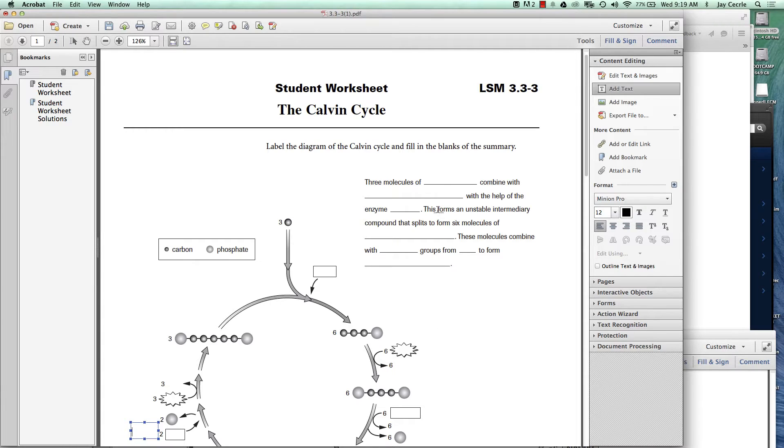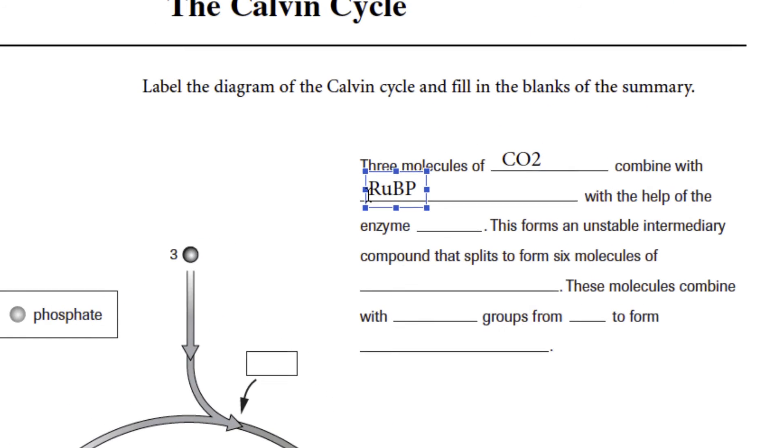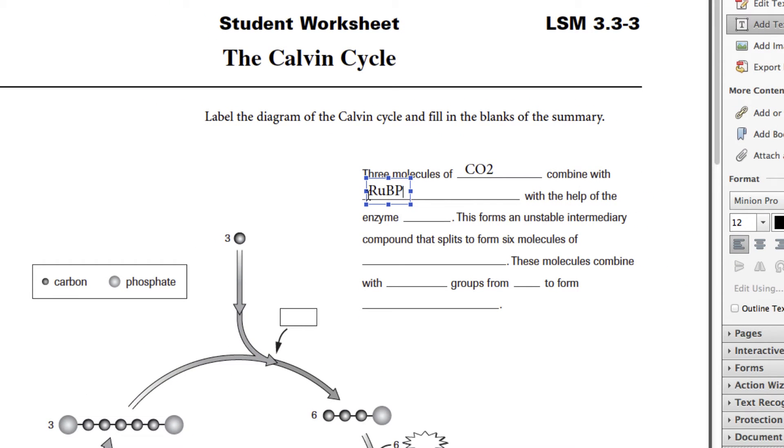Starting with the top, three molecules of carbon dioxide, CO2. This is where carbon dioxide comes in. It combines with a five-carbon molecule, and we're going to put the abbreviation RuBP, which stands for ribulose bisphosphate. This is something that's going to be made and recycled within this Calvin cycle. The Calvin cycle is named after Melvin Calvin, an American biochemist who figured this thing out. You get a five-carbon molecule that carbon dioxide is going to be combined with.